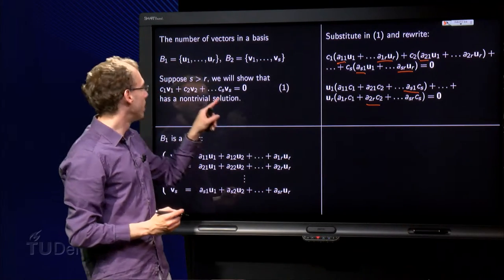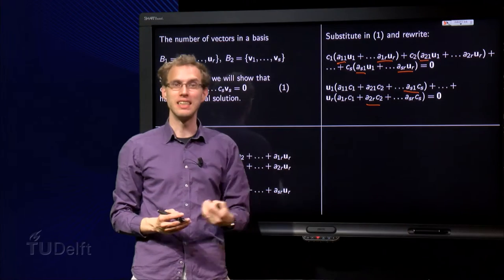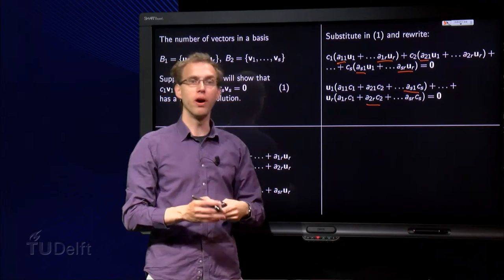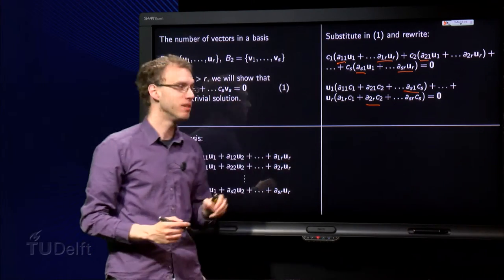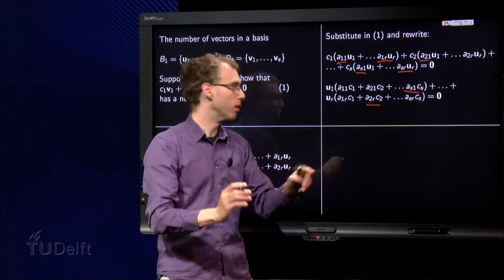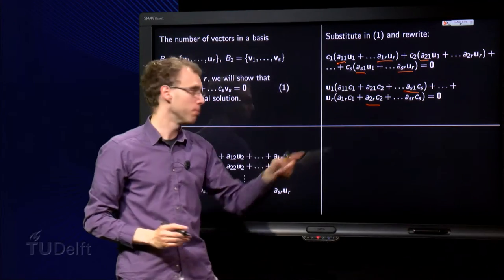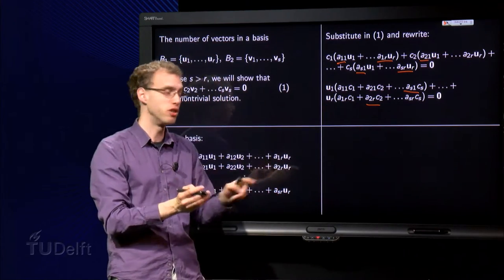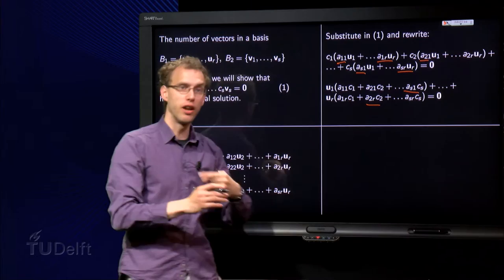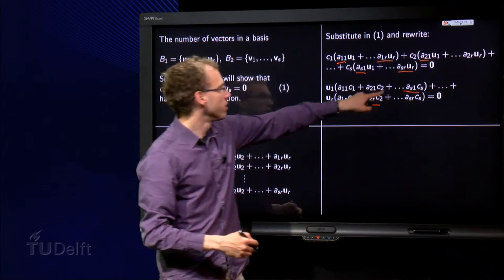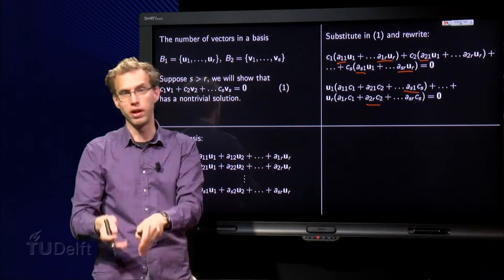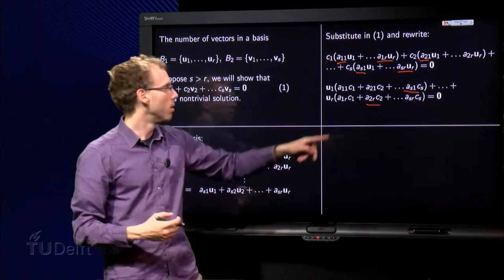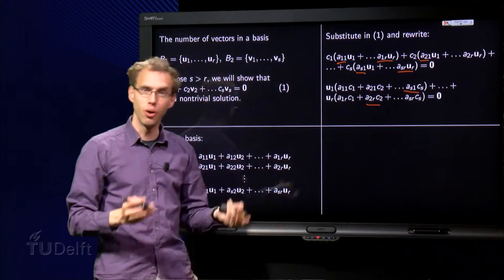Now we know that B₁ is a basis, so that means that u₁ up to uᵣ, those vectors are independent. So we have a huge equation: u₁ times a number, a₁₁ is a number, c₁ is a number, so the product is a number, plus another number, plus another number. So between the brackets over here we have a number, so we have a number times u₁ plus a number times u₂ plus until a number times uᵣ equals zero.